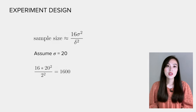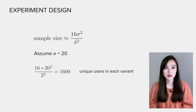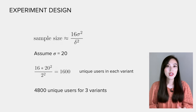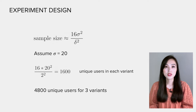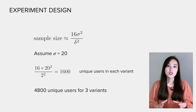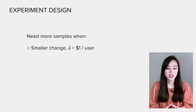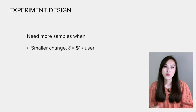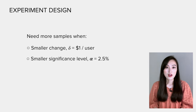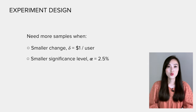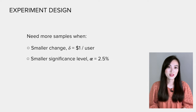This means we need 1600 unique users in each variant, so 4800 users in total across all three groups. Note that if we want to detect a smaller change — say $1 instead of $2 — we'd need more samples. Similarly, if we set a lower alpha, such as 2.5%, we would also need to increase the sample size.